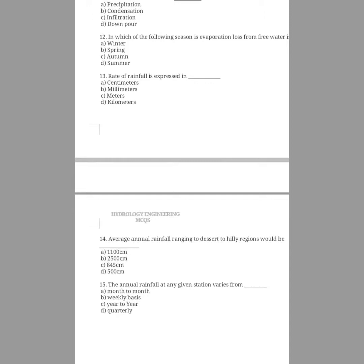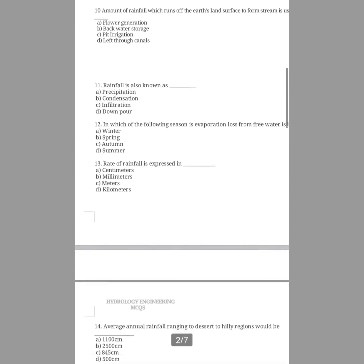The last question, number fifteen: the annual rainfall at any given station varies from what? The options are month to month, week basis, year to year, quarterly. The answer is option C, year to year, because the annual rainfall at any given station varies irregularly from year to year. The range of this variation marks the reliability of the rainfall and has great importance to the design of storage reservoirs. That is all about the MCQ questions of hydrology. Thank you.